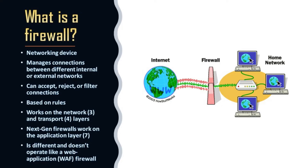Let's start with what a firewall even is. A firewall is a networking device and tool that manages connections between different internal or external networks. They can accept or reject connections or even filter them, and everything is based on rules. Remember that firewalls work on the network and transport layer — layers three and four of the OSI model. However, there are some firewalls that can operate on the application layer, or layer 7 of the OSI model, and these are considered smarter. They're known as next-generation firewalls.